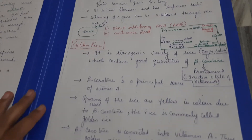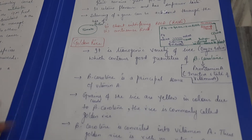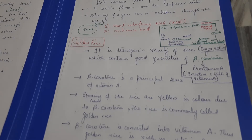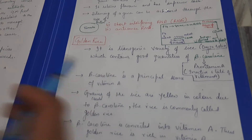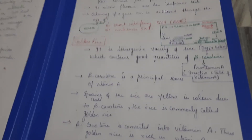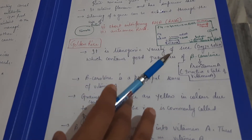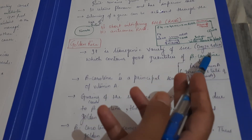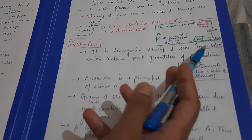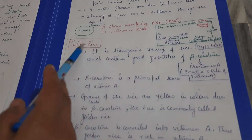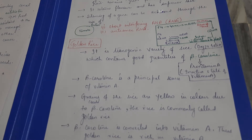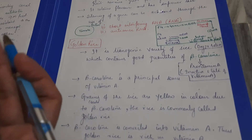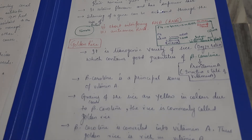Another application of biotechnology in agriculture is Golden Rice. Golden Rice has a yellowish color, which is why it is named golden. It is a transgenic variety of rice — scientific name Oryza sativa. Golden Rice is a transgenic variety that contains a good quantity of beta carotene.